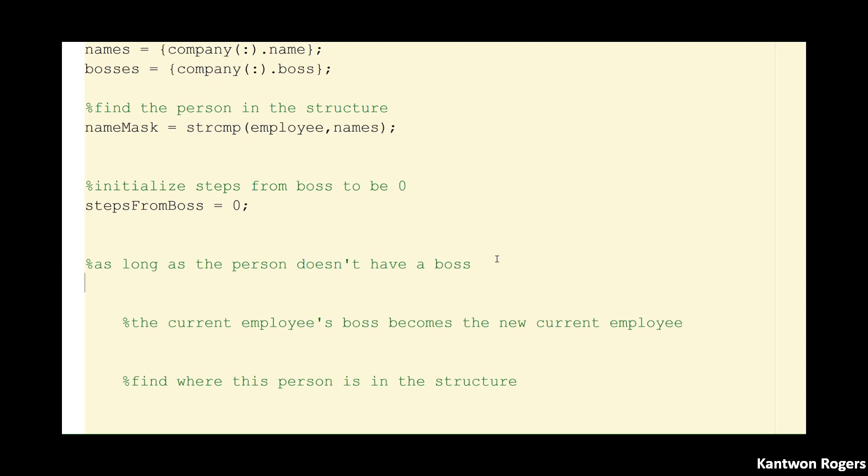Our boss is dictated by having an empty bracket inside of the boss field. So therefore what we can do is we can say while, so we have to use a while loop because we don't know how many times we want to loop through our structure.